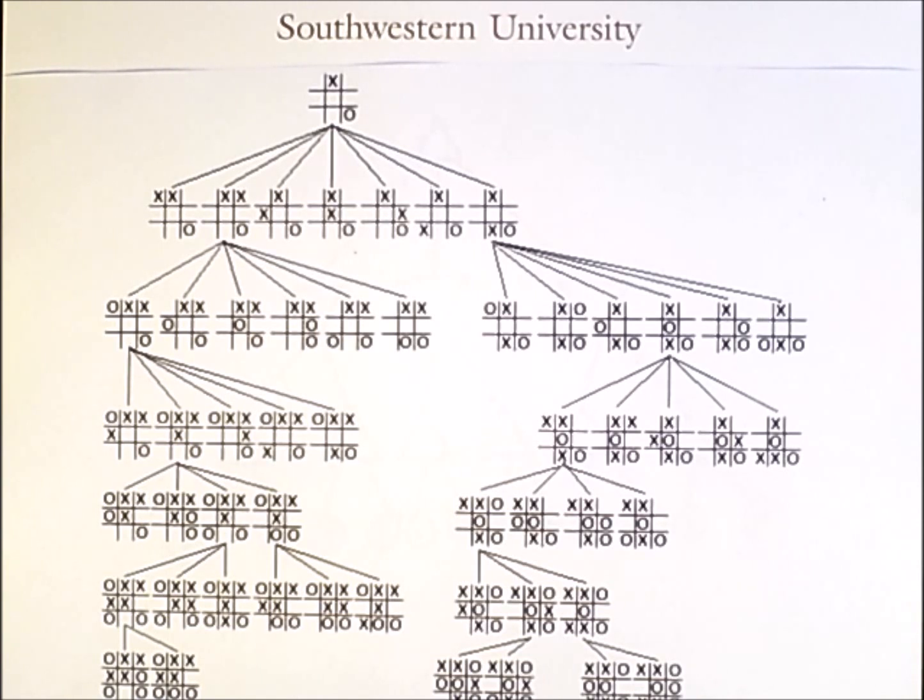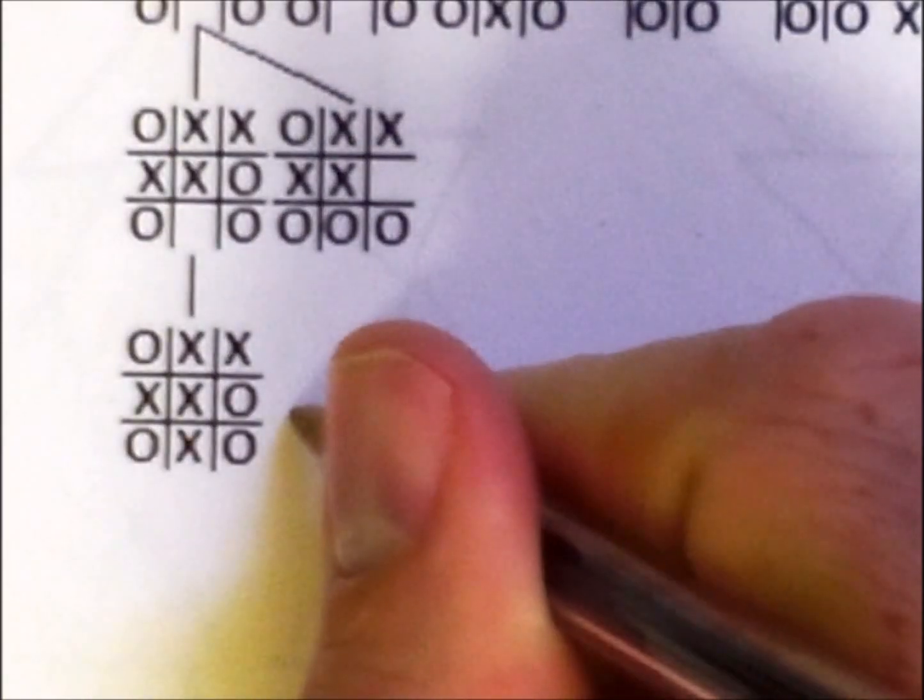The process can be made more concrete by assigning a numeric value to each terminal state. In the case of tic-tac-toe, it makes sense to assign a state where x wins a value of 1.